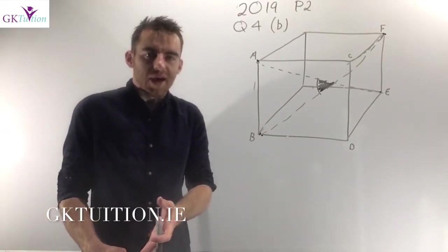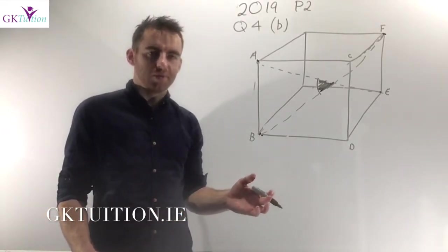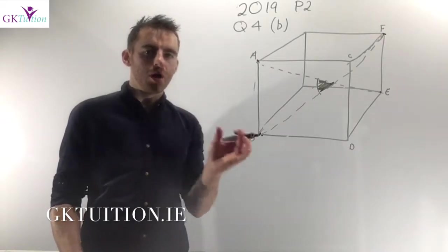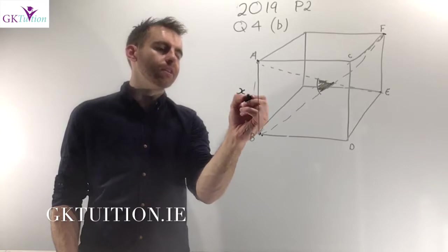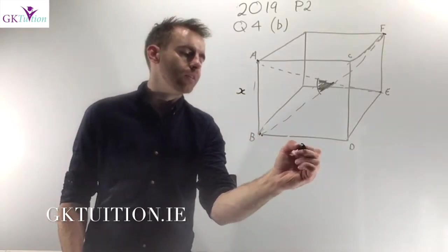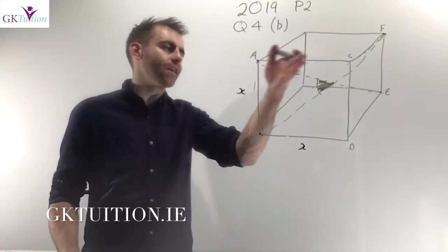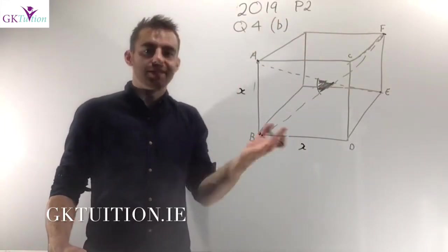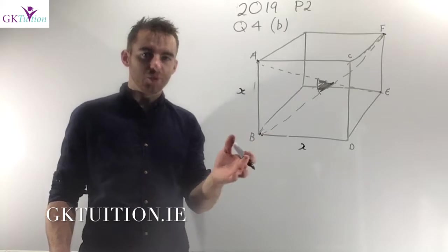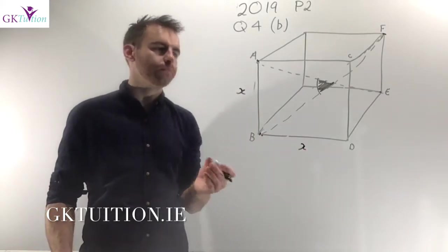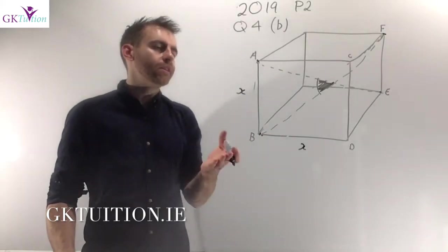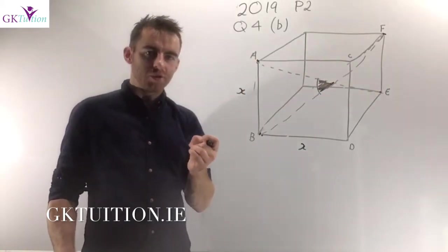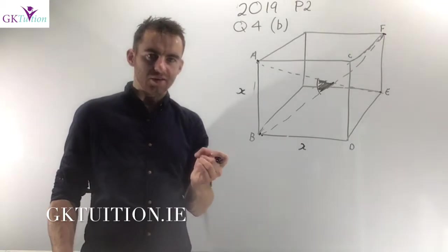Our obvious problem here is we don't have any lengths or distances whatsoever, so we need to label them as something. Remember, if it's a cube all the lengths are the same. I could say the distance from a to b is x, the distance from b to d is x, d to c is x — all the sides are the distance x. That's our starting point. Our goal is to find the distance from a to e, in other words the internal diagonal of this cube.